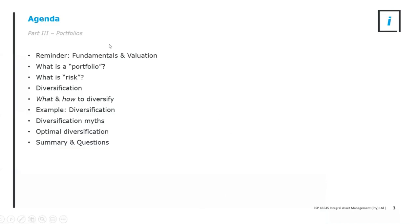Without further ado, I'm going to jump into part three: portfolios. I'll briefly touch on a reminder of what fundamentals and valuation are and what we're looking for, then set the scene for building a portfolio, understanding what risk is, going into themes of diversification — what to do, how to think about it, what to diversify, how to diversify, a basic example of diversification, some myths of diversification, and then the concept of optimal diversification before we open up for questions.